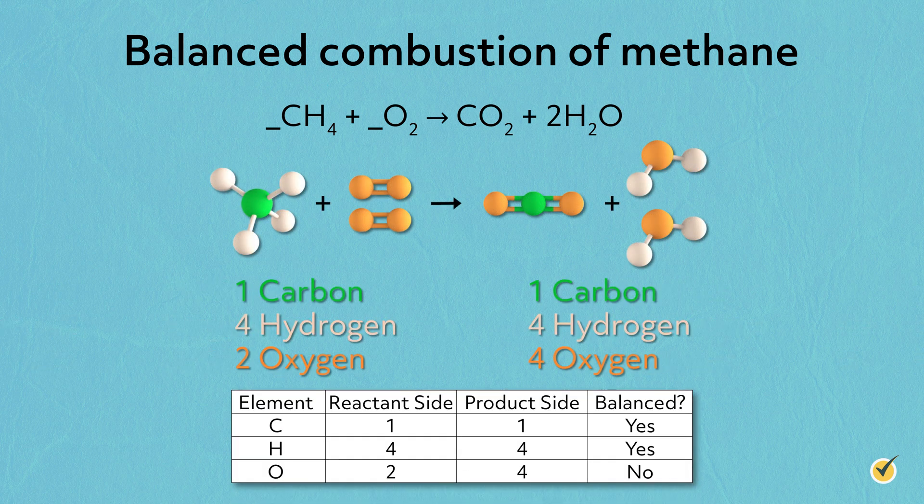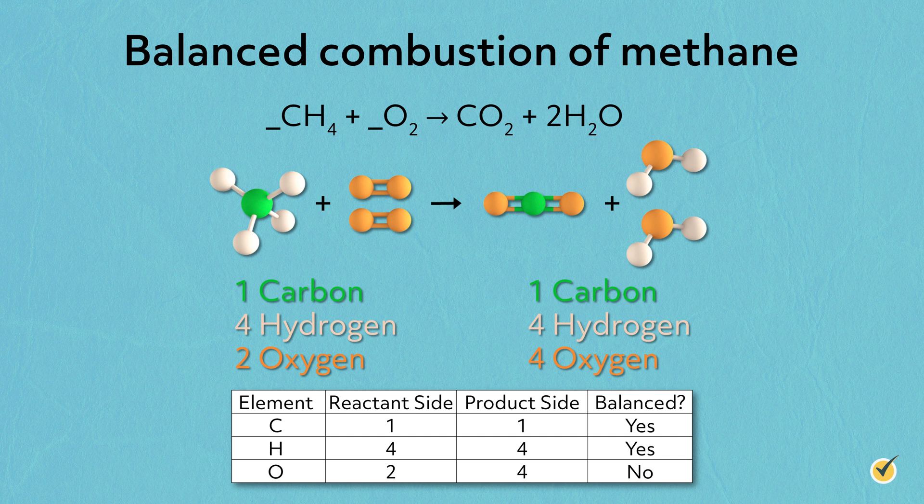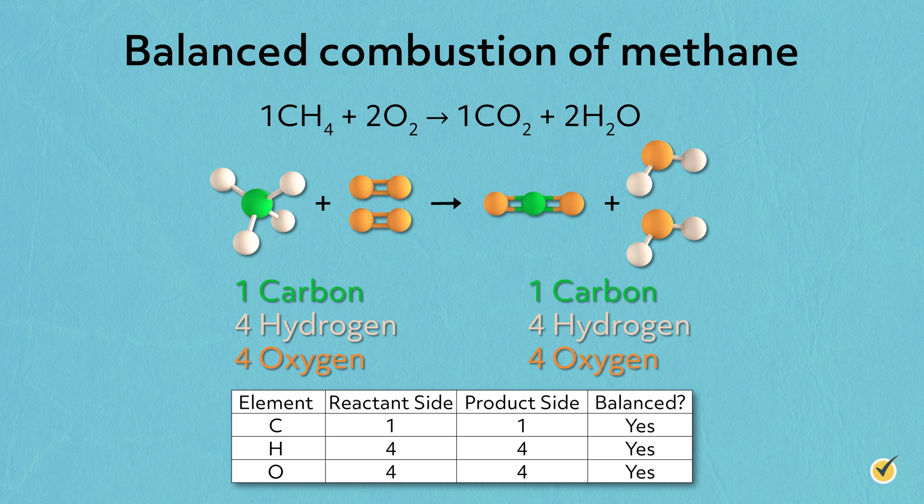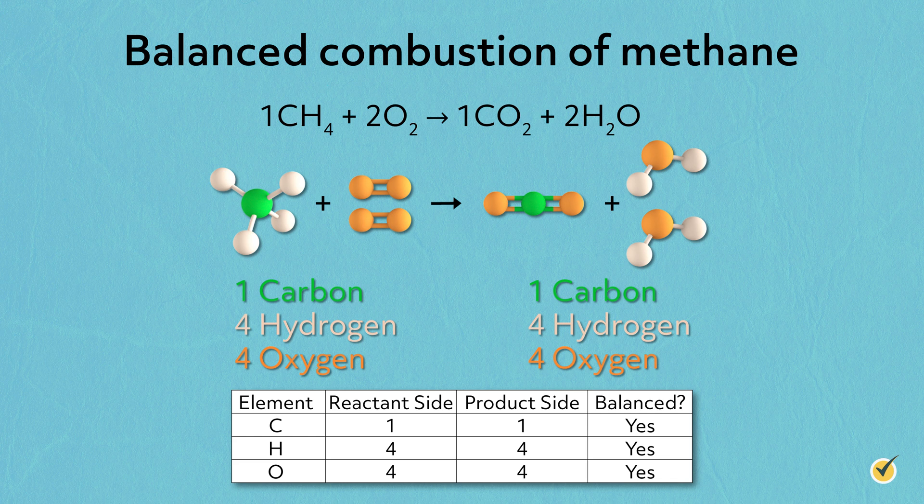Now, notice by doubling the water, hydrogen, in addition to carbon, is now balanced. Now, to finish, we just need to balance oxygen. We have 2 on the reactant side and 4 on the product side. So by simply adding a second molecule of oxygen to the reactant side, we have ourselves a balanced reaction.